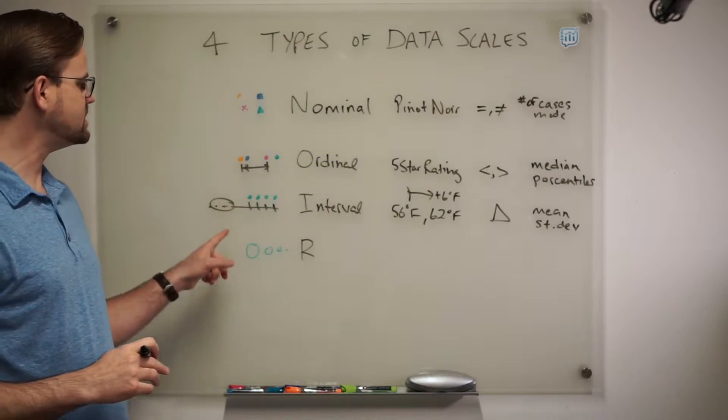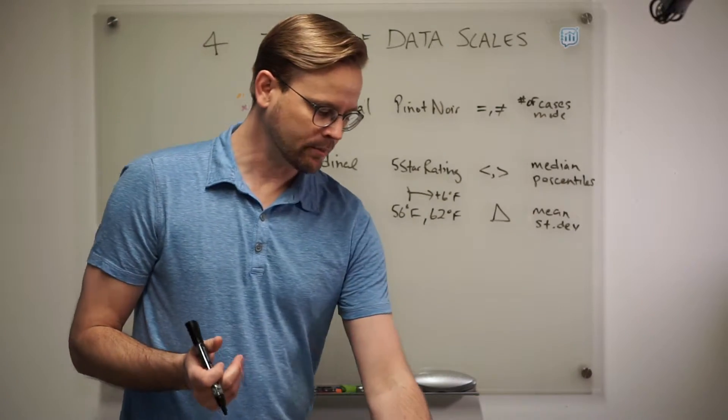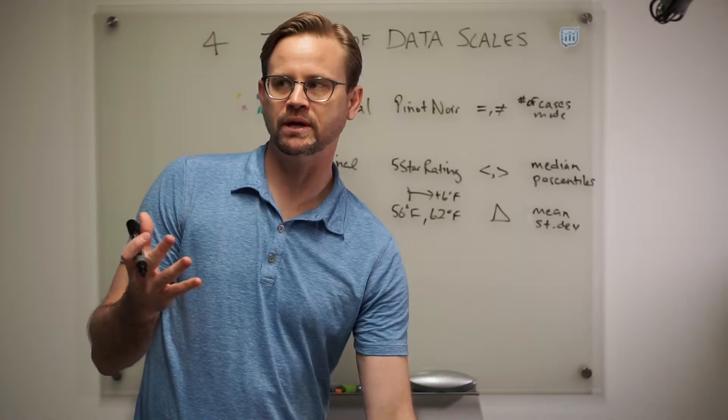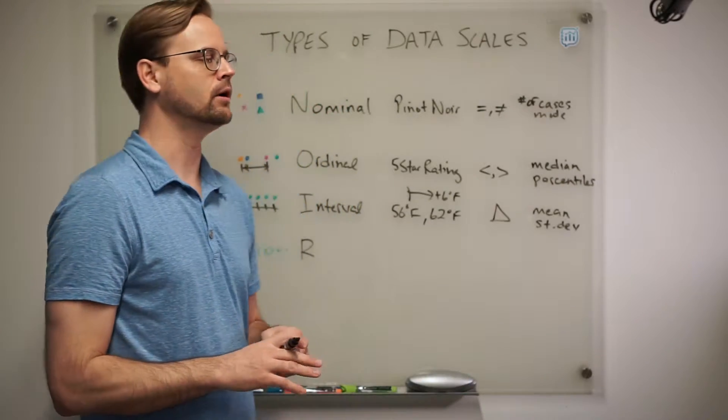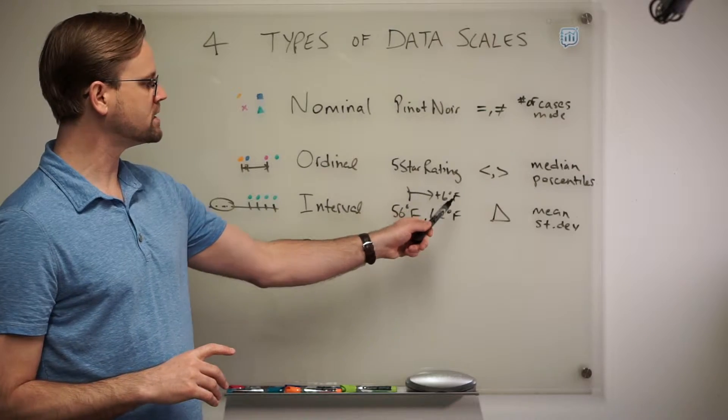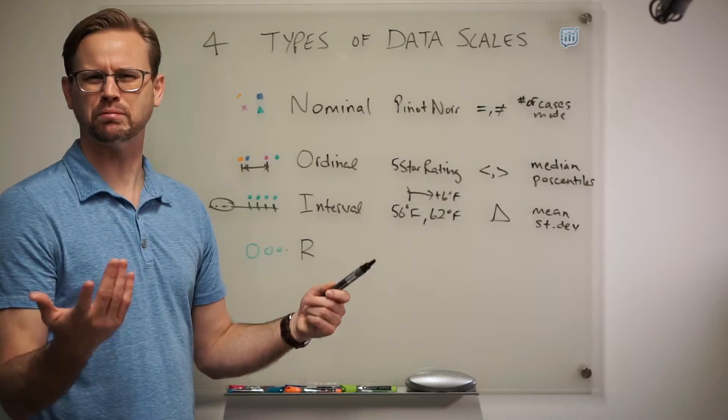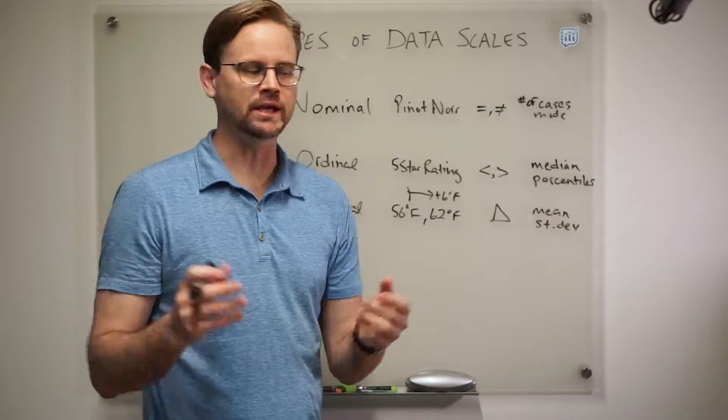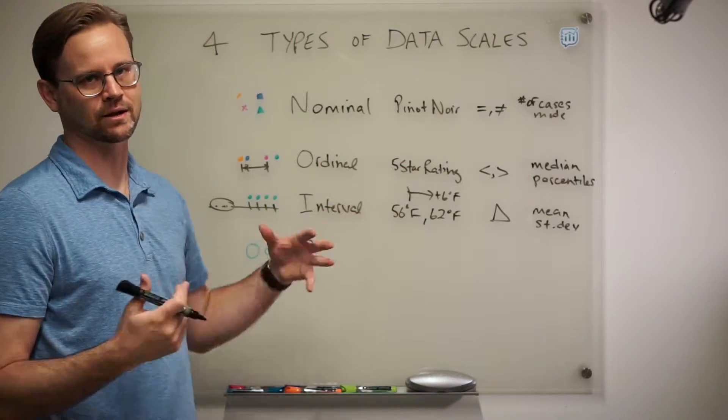But because of the fact that the zero point is arbitrary, there's no such thing as like, well, zero degrees Fahrenheit. There's such thing as it, but it doesn't mean no heat or no temperature. It's kind of an arbitrary zero point. So that's why, even though this is plus six degrees Fahrenheit, it isn't plus 10%. If I double the temperature, I don't have like twice as much heat. That's really not how interval data scales work.